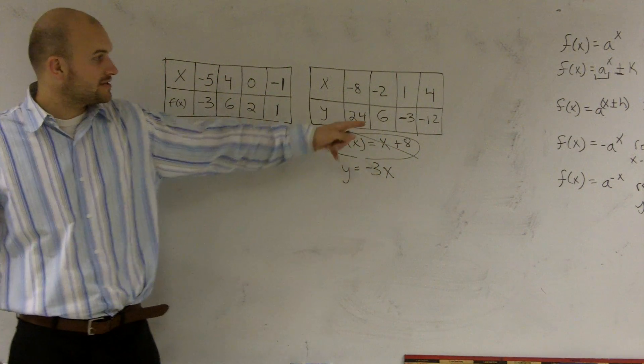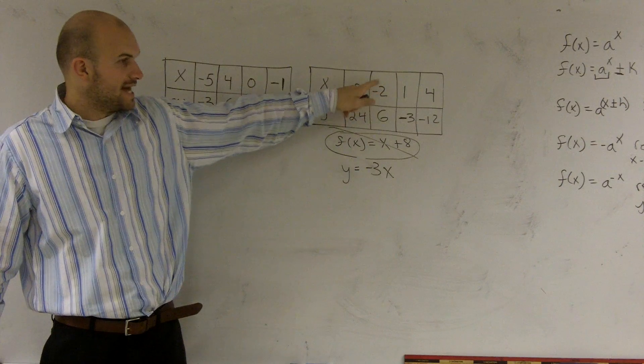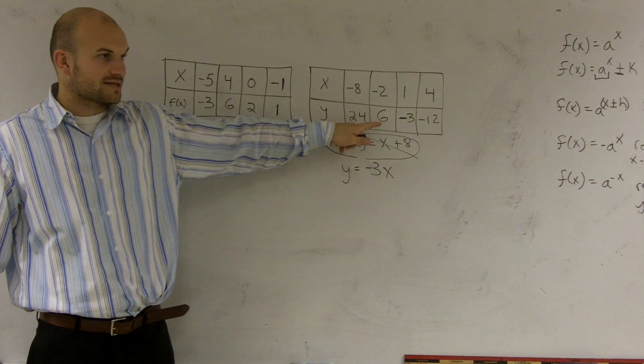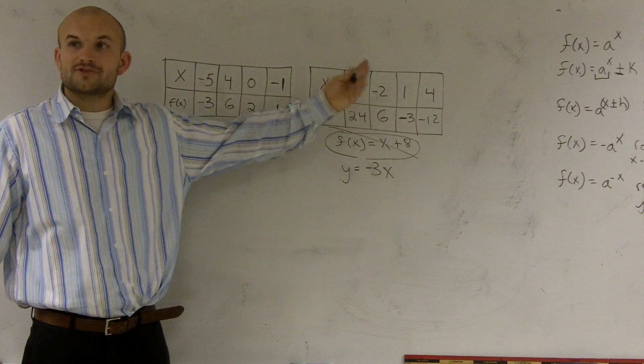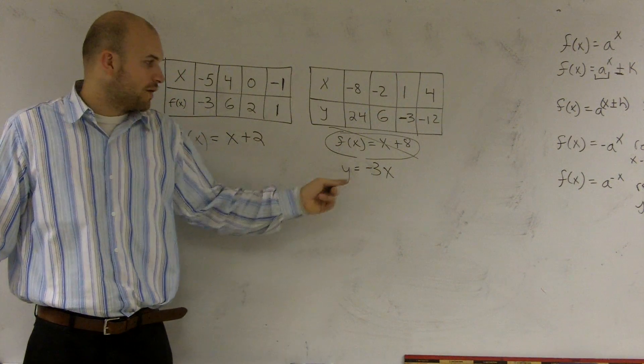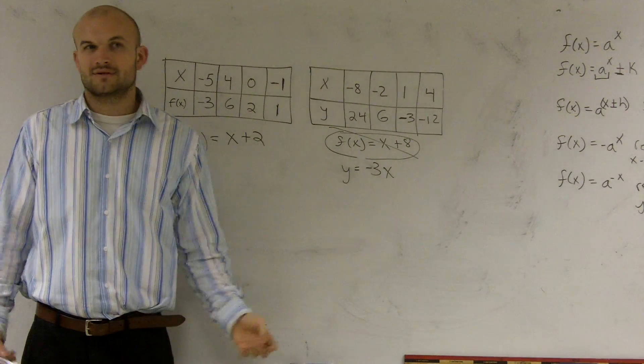Now, does that work for the rest of my x values? If I plug in a negative two, negative two times negative three, does that give me a positive six? Yes, it does. So therefore, and I've checked it for the rest of them, it works for all of them. So therefore, this rule is y equals negative three x. You guys see that?